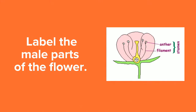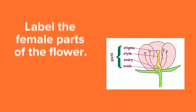Label the male parts of the flower. It's called the stamen. The top of it is called the anther and the bottom part is the filament. Remember: men, stamen — it's the male part.